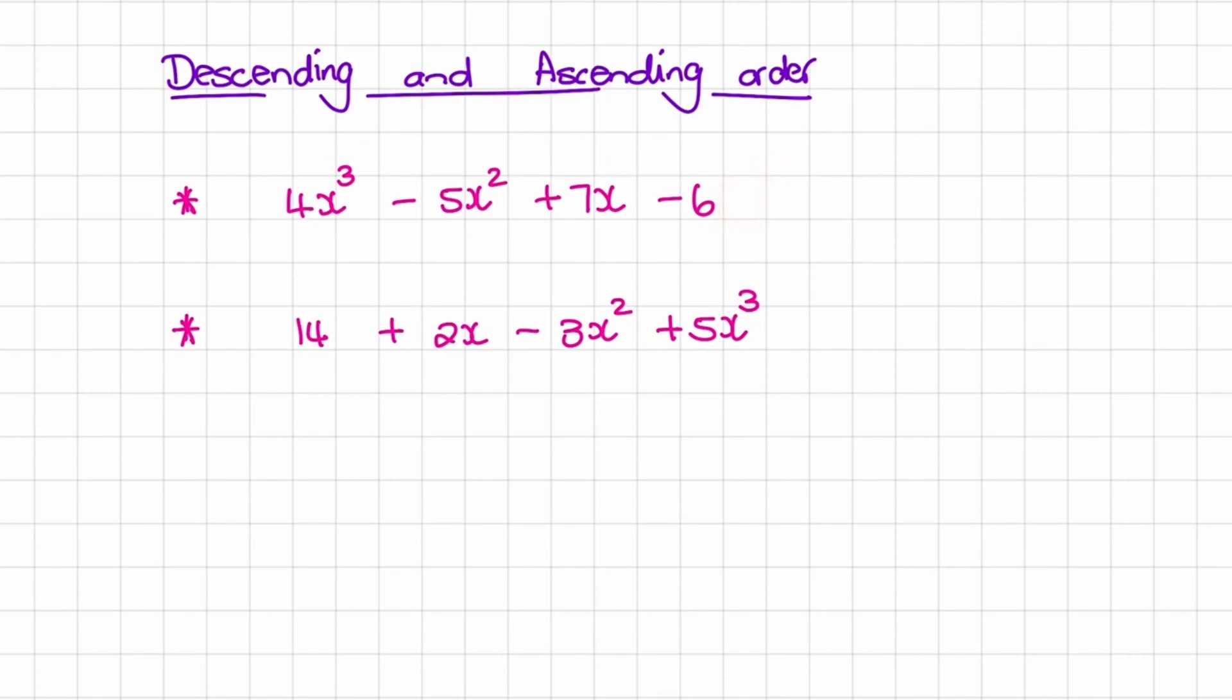So because we are counting down the exponents, if we move from left to right, we say this expression is written in descending order. For descending order, we don't look at the coefficients or the signs between exponents.